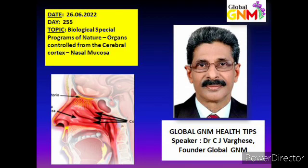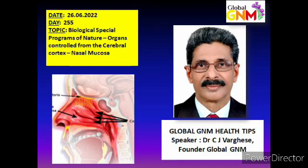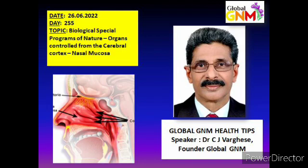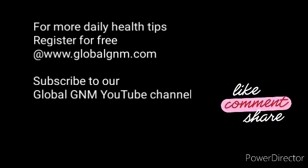Before going into the details of the biological special program of the nasal mucosa — with its conflict-active phase, healing phase, symptoms, and related medical conditions — please remember that the whole of this SBS follows the outer skin sensitivity pattern. That means there will be hyposensitivity during the conflict-active phase and hypersensitivity during the healing phase. When the nasal mucosa becomes hypersensitive, even a single touch of the nose provokes symptoms of sneezing or nasal discharge — indicating the conflict is resolved and the SBS has entered the healing phase. The detailed SBS of the nasal mucosa we will study tomorrow. Until then, goodbye. I am Dr. CJ Vargis from Kerala, India.